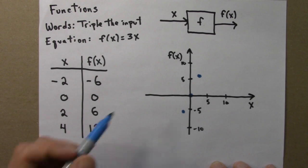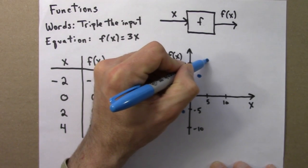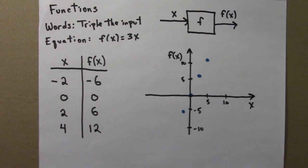And then 4, 12. Over 4, up 12. There it is. So those are my 4 points.